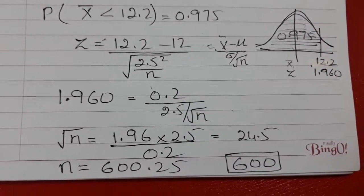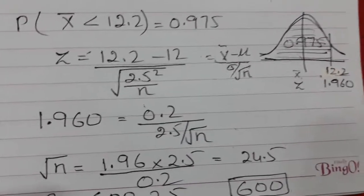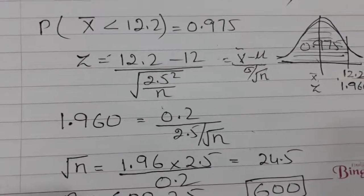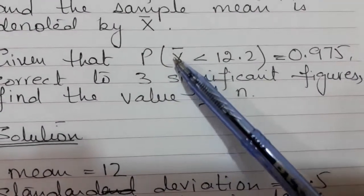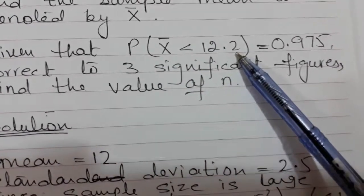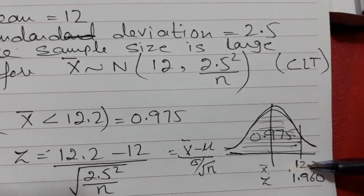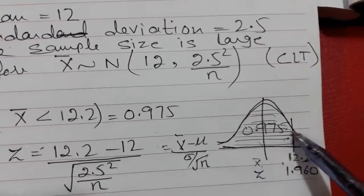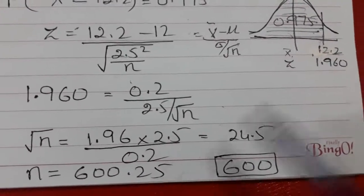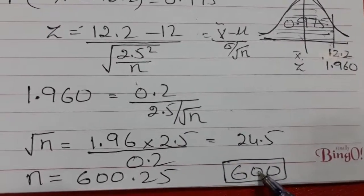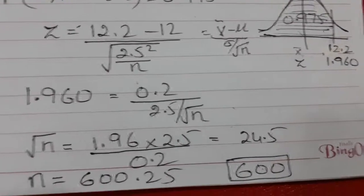The question asked for the probability of X-bar less than 12.2 being 0.975. Here 12.2 is the X value and 1.960 is the Z value, and the condition is less than. So when the answer comes to 600.25, you take the integer value less than this, which is 600. If the question had said 'more than', you would take the next integer value. I hope that makes sense.